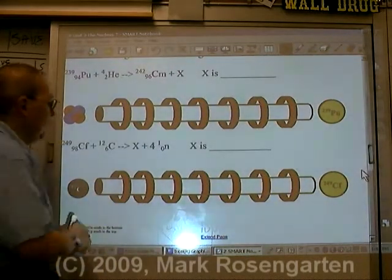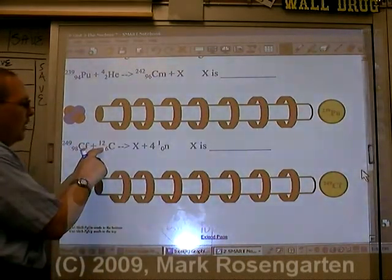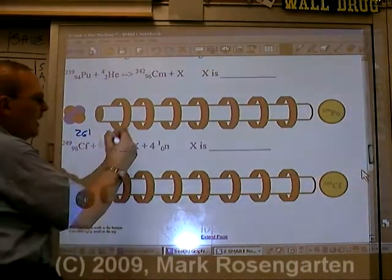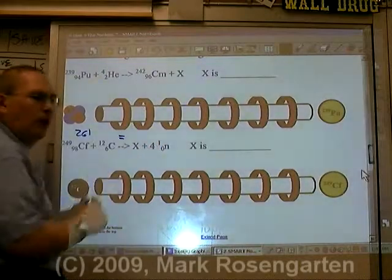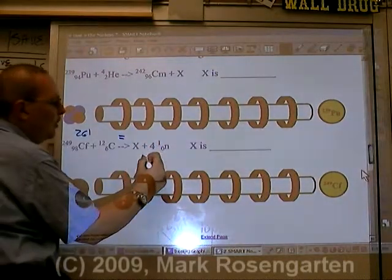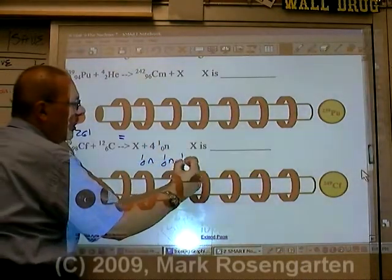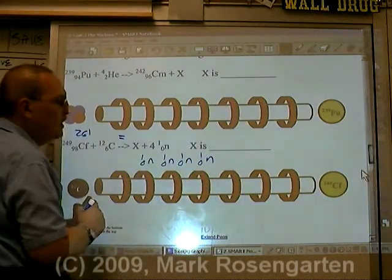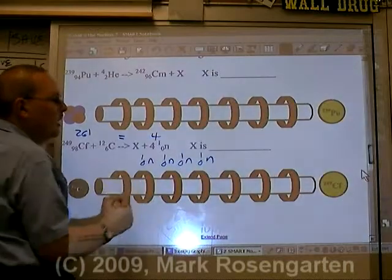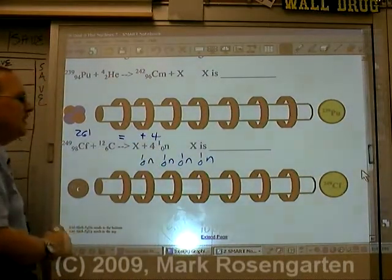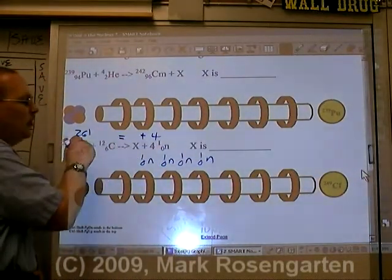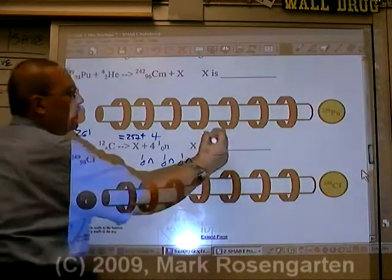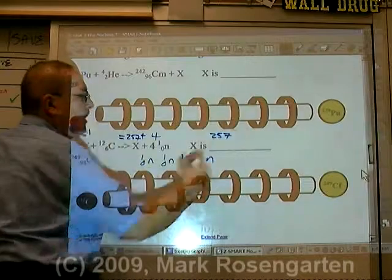You form a new element and four neutrons are thrown out. So, let's see what we get. 249 plus 12 is 261. And we have 261 on that side equals... Now, we've got four neutrons. That's like saying 1-0-N, 1-0-N, 1-0-N, and 1-0-N. So, the total combined mass of these four neutrons is 4. Plus, well, let's see. What plus 4 is 261? 257. So, the new mass is 257.